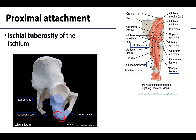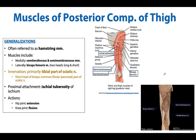In terms of distal attachments, the medial hamstring muscles are going to be attaching on the medial tibia, and the lateral biceps femoris attaches on the lateral fibula. Thank you for your time and attention, and please always feel free to reach out with any questions you may have.